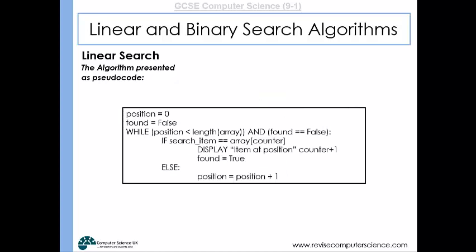Here is the linear search in pseudocode. We start with a variable called 'position' set to zero, ensuring we start at the beginning of the array, and a flag variable called 'found' set to false. Whilst the position is less than the length of the array and 'found' is false, we check whether the search item is at that array location. If it is, we record the position and set 'found' to true, breaking the while loop. Otherwise, we increment position by one and repeat.